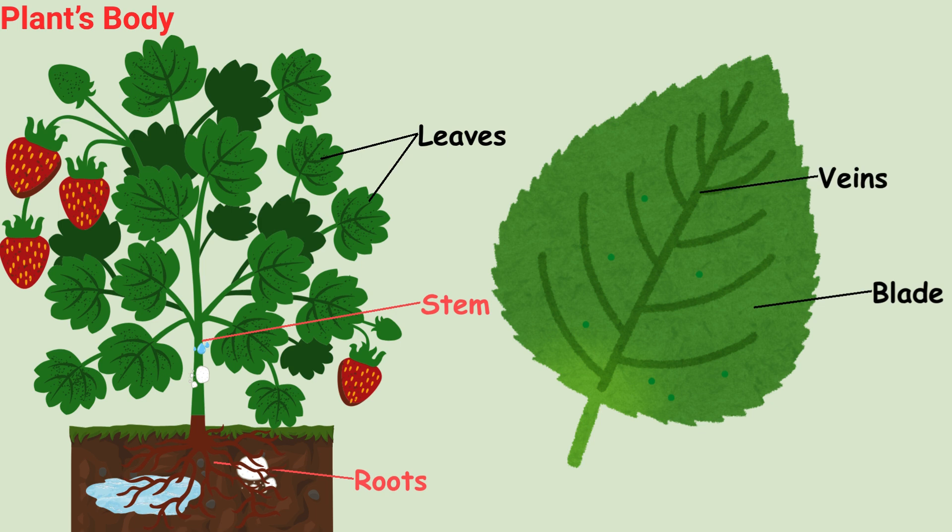Veins. Tiny lines that carry water and food. Stomata. Tiny holes that take in air and let out gases. Leaves use sunlight, air, and water to make food through photosynthesis.